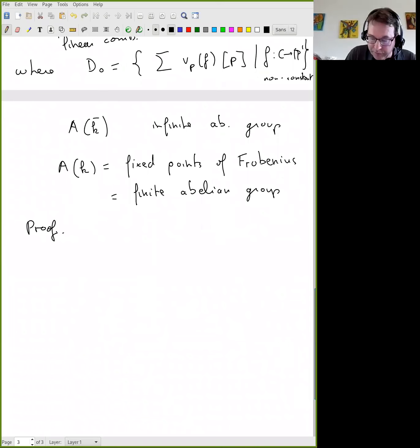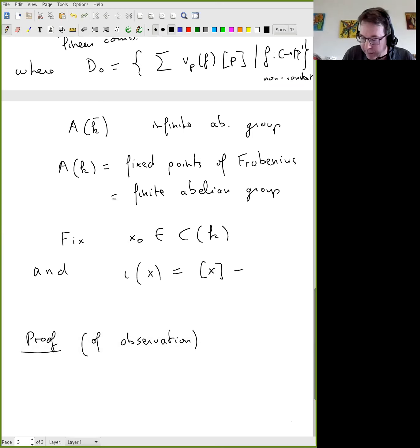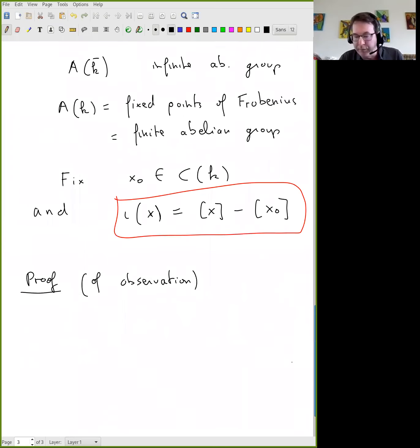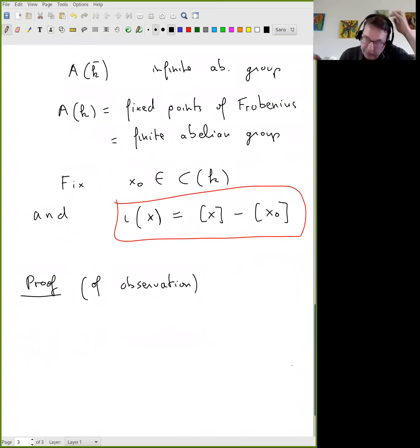So the Frobenius acts on the points of the curve. It acts also then on the divisors and it respects D_zero. And if you look at the fixed points, you get a certain finite abelian group. It's maybe not clear that it's finite, but it is finite. Now we can prove the observation based on this description. So I didn't tell you what is the embedding. So fix an X_zero point defined over the finite field. And then I of a point is just the divisor with one coordinate X minus X_zero.